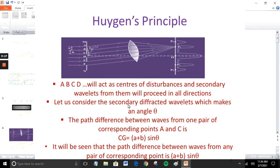According to Huygens' principle, the points on the slits A, B, C, D act as a source of secondary wavelets which spread in all directions on the other side of the grating. Let us consider the secondary diffracted wavelets which make an angle theta with normal.